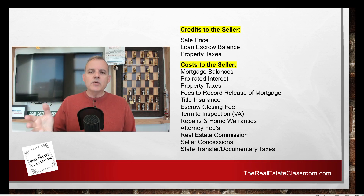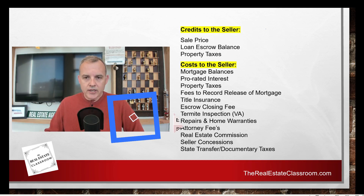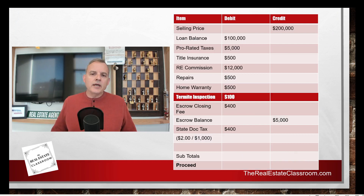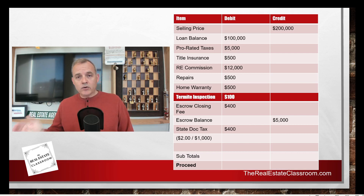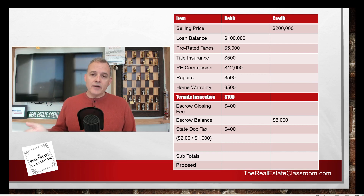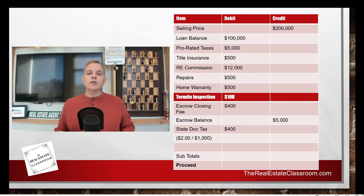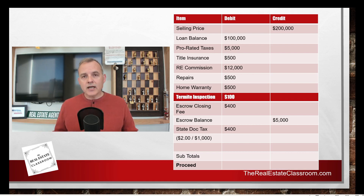Now let's see what it looks like on a seller proceeds statement. Here's what a typical seller proceeds statement would look like. We have three columns: one column for the item being debited or credited to the seller, then the debit column and the credit column. We identify each item and then determine which column that cost goes into.